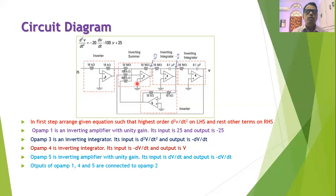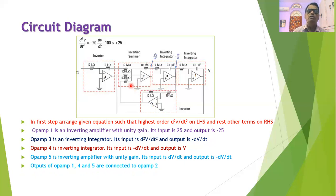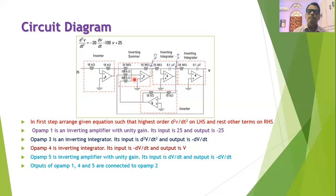As you can observe in the circuit, the outputs of operational amplifiers 1, 4, and 5 are connected together to the input of operational amplifier 2. Appropriate resistances are used at the input, and operational amplifier 2 is an inverting summer circuit.